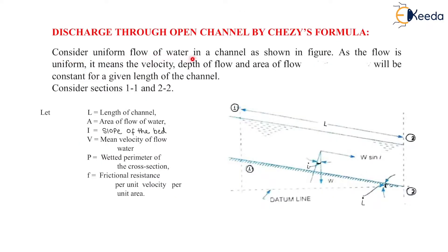Consider uniform flow of water in a channel as shown in the figure. As the flow is uniform, it means that the velocity, depth of flow, and area of flow will be constant for a given length of channel. Now consider section 1-1 and section 2-2 as shown here.